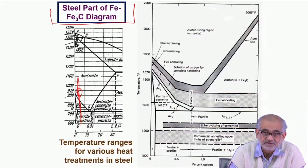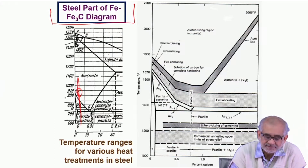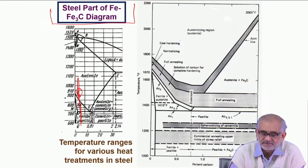So there is no question of transforming ferrite into martensite. In order to do that you have to again reheat, go to the austenitic zone, and then quench - only then can you get martensite.